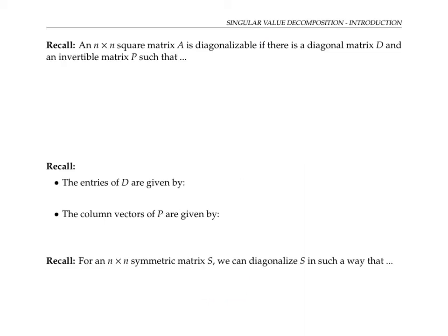Recall that an n by n square matrix A is said to be diagonalizable if there's a diagonal matrix D and invertible matrix P such that A equals PDP inverse. The diagonal entries of D are given by the eigenvalues of A, and the column vectors of P are given by the corresponding eigenvectors of A.